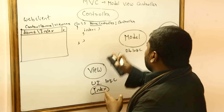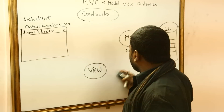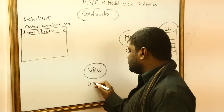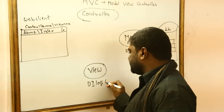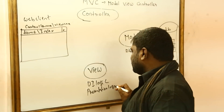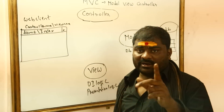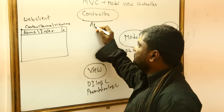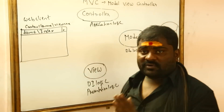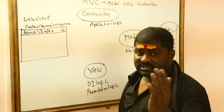Now here you can see how the control will flow in MVC. The code you write in the model is database logic. The code you write in the view is user interface logic — that is, presentation logic. The code you write in the controller is application logic — how the data will flow from controller to model and controller to view.